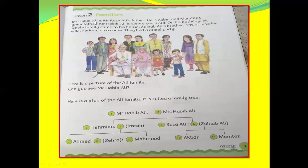Mr. Habib Ali is Mr. Raza Ali's father. He is Akbar and Mumtaz's grandfather. Mr. Habib Ali is 80 years old. On his birthday, his whole family came to his house. Zainab Ali's brother Anwar and his wife Fatima also came. They had a grand party. Here is a picture of the Ali family. Can you see Mr. Habib Ali?